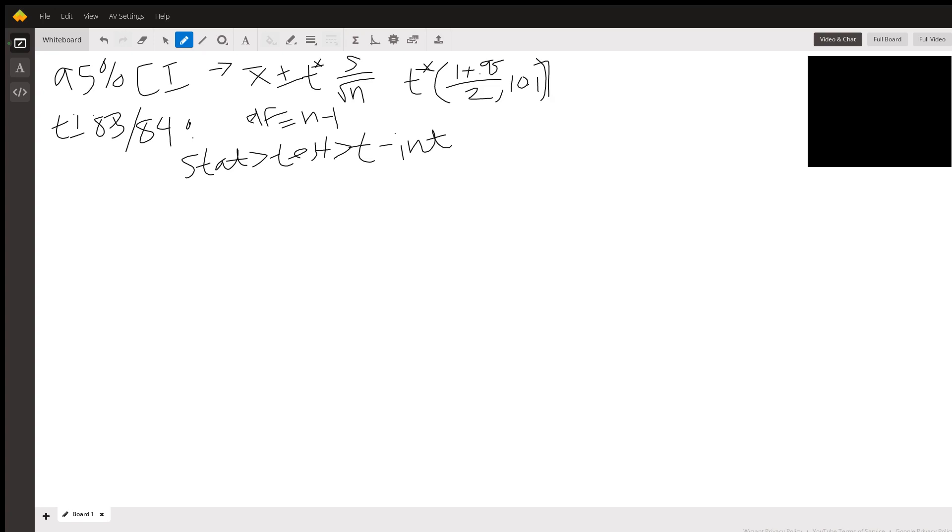One of the other tutors gave you a really great formula to use. A 95% confidence interval, or any percent confidence interval that we're trying to find, is given by x bar plus or minus t star times s over square root of n.